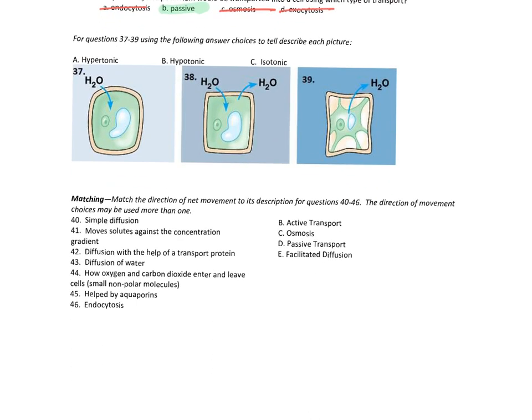Here are these three things. Which is 37 — which is hypotonic? Stop putting things away. It's B. Water's going into the cell. Water goes to where it's more hypertonic — so if it's going in, the outside is hypotonic. The middle one is isotonic. Hypertonic obviously is the last one because water's leaving. By the way, this is plasmolysis — shrinking up and dying.